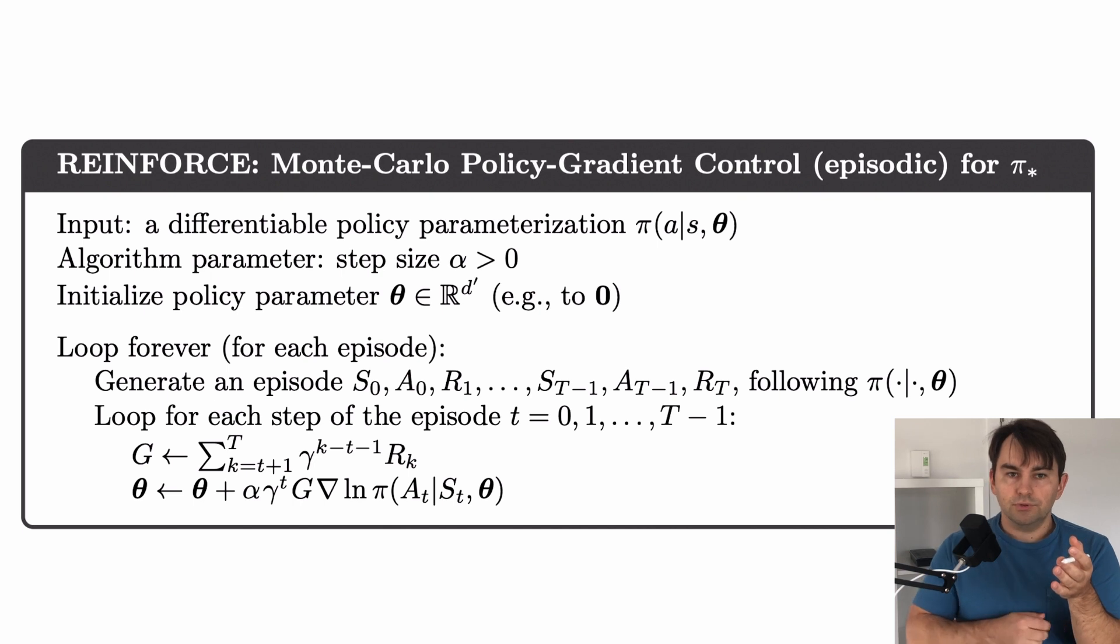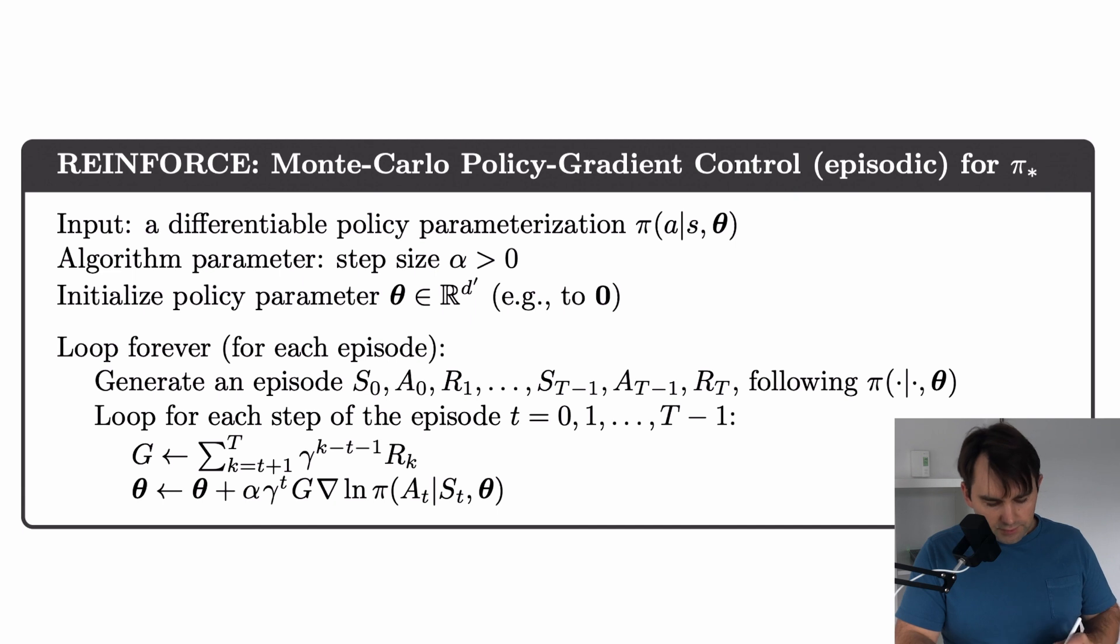So how does REINFORCE do that? Let's take a look at the REINFORCE algorithm. The input to the REINFORCE algorithm is some policy π, which outputs an action given some state. It's parameterized by some parameters θ and outputs some action a. This could be our neural network. Then we have a step size α. For example, this could be a step size for our Adam optimizer. And this is just initializing our neural network weights.